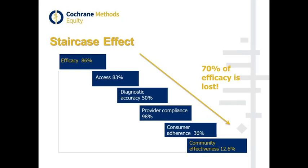With bed nets, for example, frequently the bed net is stolen by the father of the family and the children are left exposed. This is one of the reasons why you need to give multiple bed nets to families. This is also sometimes described as the funnel of attrition, the phrase used frequently in the Campbell collaboration.